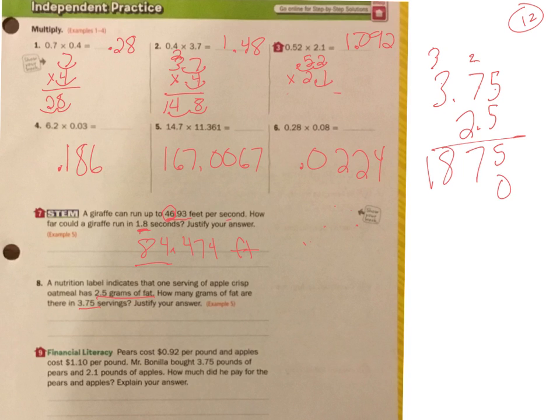There we go. Add my 0. 2 times 5 is 10. 2 times 7 is 14. Add 1 is 15. 2 times 3 is 6. Plus 1 is 7. Okay. Now I have 5, 7. That's 13. 7, 8, 9. 9. 1, 2, 3. 1, 2, 3. So 9.375. That's good. That's around 12. 9.375 grams of fat.